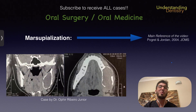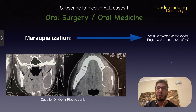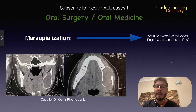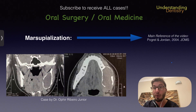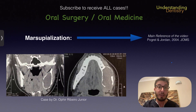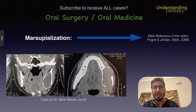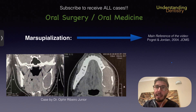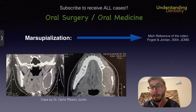Hello guys and welcome to this video to understand about marsupialization. This is an alternative treatment for cysts, and we need to understand how this procedure actually works. To perform a marsupialization, we need to do an excision of the overlying mucosa and then open a window in the cystic cavity in order to suture the cystic lining to the oral mucosa.